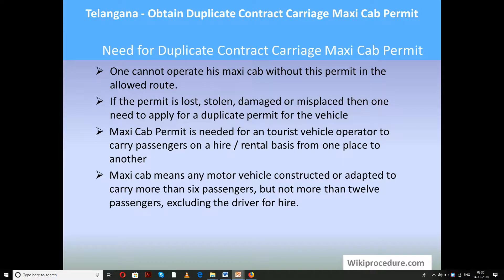Let us see the need for a duplicate contract carriage maxi cab permit. One cannot operate his maxi cab without this permit under the allowed rules. First of all, this permit is required for the owner of the vehicle in order to use the vehicle for hire or rental basis to carry passengers from one point to another. Maxi cab means any motor cab or motor vehicle constructed to carry more than six passengers but not more than 12 passengers, excluding the driver, for hire.